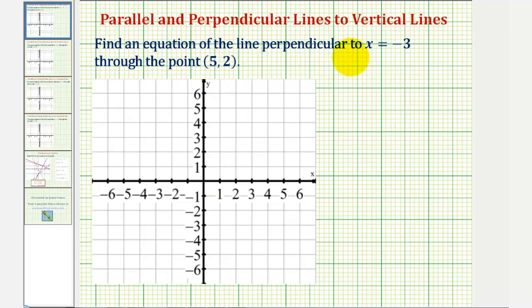We want to find an equation of a line that is perpendicular to x equals negative three through the point (5, 2).